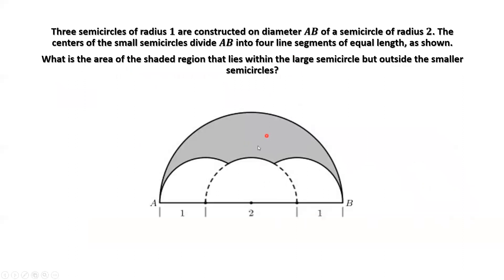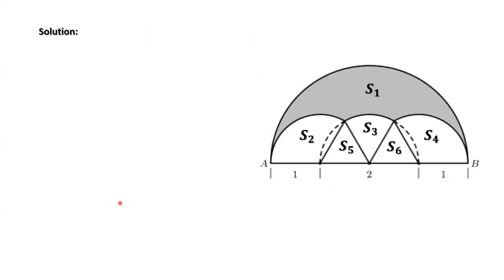The question is to find this shaded area. This is the original question. How to find this shaded area? We draw a few lines to cut the white part into five areas: area two, three, four, five, six.